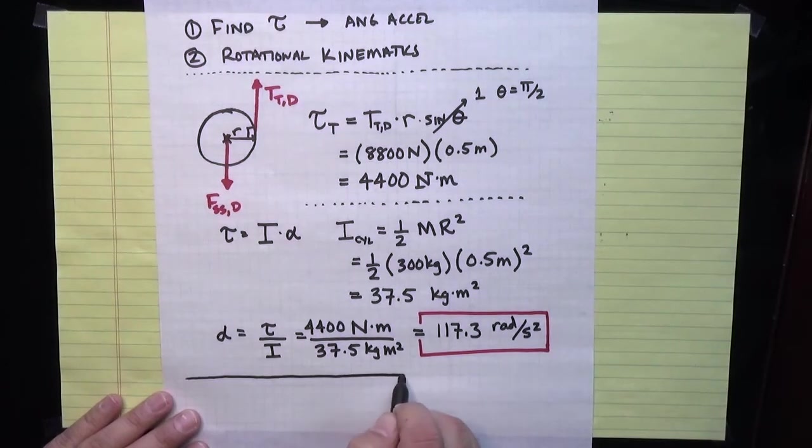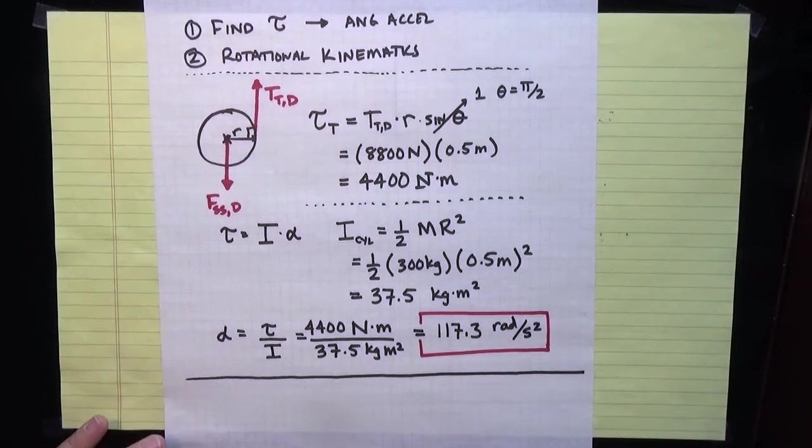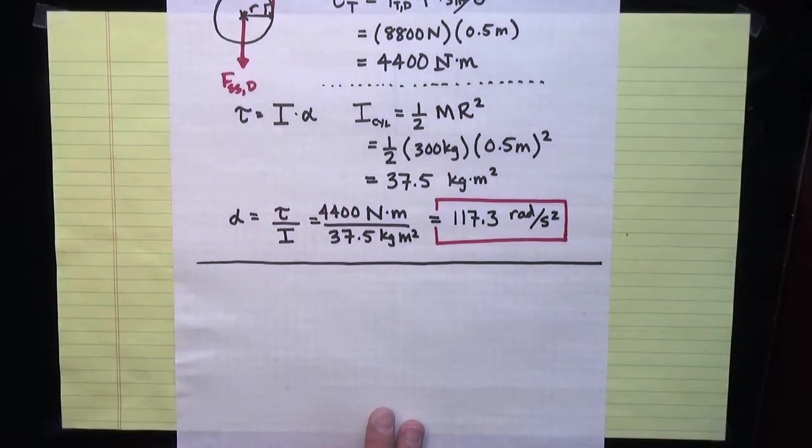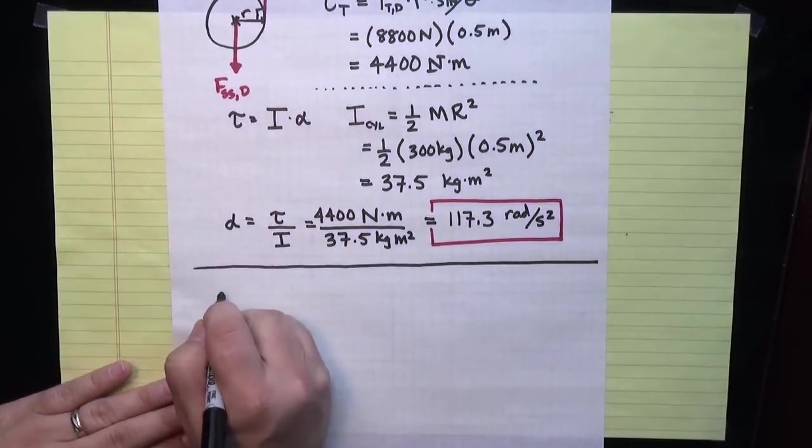Now at this point, since I know alpha and I know that initially it was at rest, I can turn this into a kinematics problem. I'm going to write out my kinematics table, which we always do.